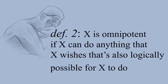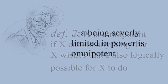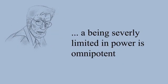The first objection has been haunting most other definitions of omnipotence since it was introduced by Alvin Plantinga in 1967. Suppose we define omnipotence according to definition 2: X is omnipotent if X can do anything that X wishes that's also logically possible for X to do. Alvin Plantinga has shown that definition 2 implies the nonsensical consequence that any being who is severely limited in power is omnipotent.